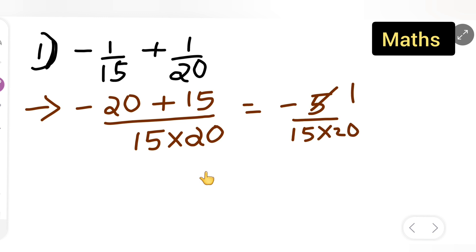5 ones are, 5 threes are. So, what will be your answer? Minus 1 upon 60. Because 3 twos are, you will get 60. So the final answer is minus 1 upon 60.